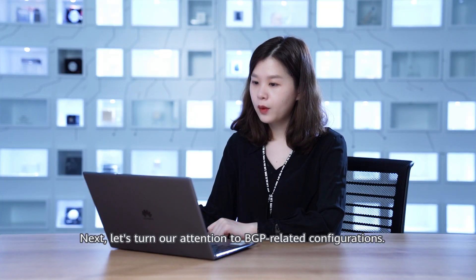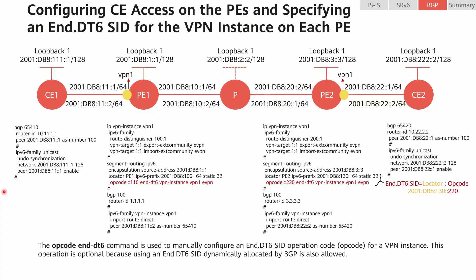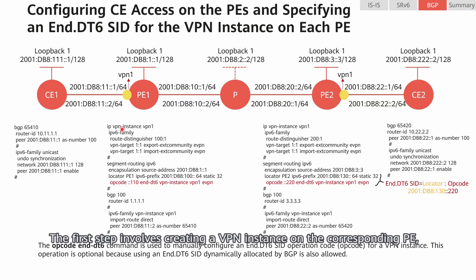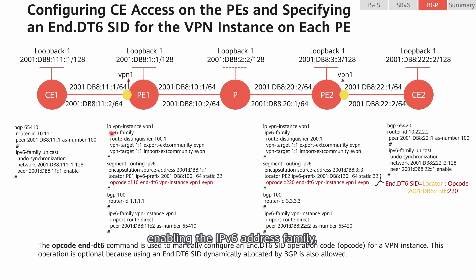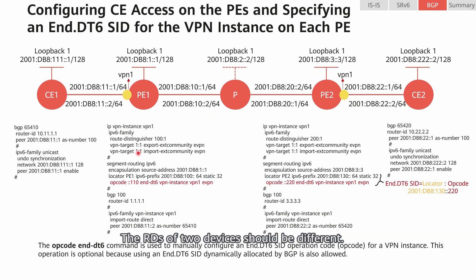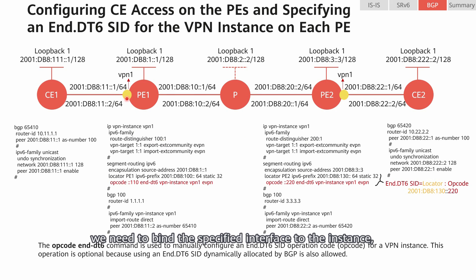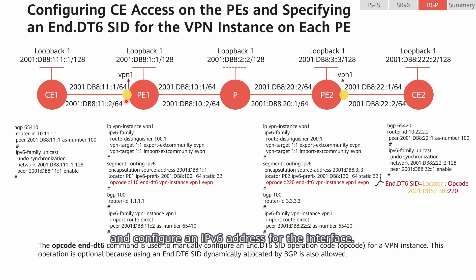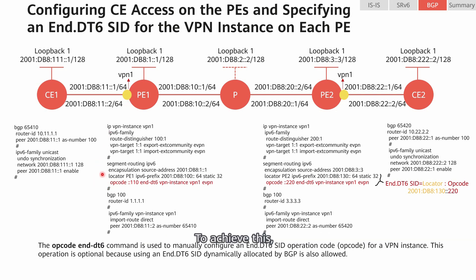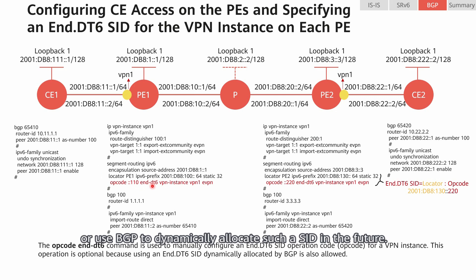Next, let's turn our attention to BGP-related configurations. The first step involves creating a VPN instance on the corresponding PE, enabling the IPv6 address family, and configuring an RD and VPN targets. The RDs of two devices should be different. After configuring the VPN instance, we need to bind the specified interface to the instance, enable IPv6 on the interface, and configure an IPv6 address. Then we can allocate an End.DT6 SID to the VPN instance — either by running the opcode command to configure one manually, or using BGP to dynamically allocate one in the future.